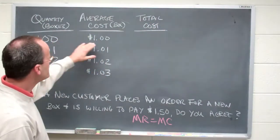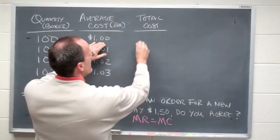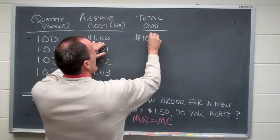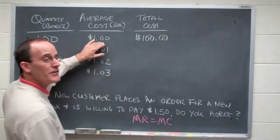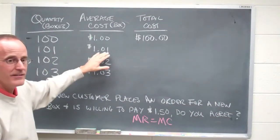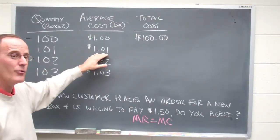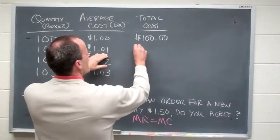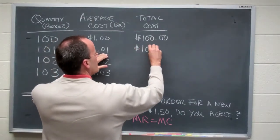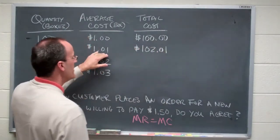So I've got one hundred times a dollar. Total cost would be one hundred dollars. 101 boxes times one dollar and one cent is going to give me 102 dollars and a penny.